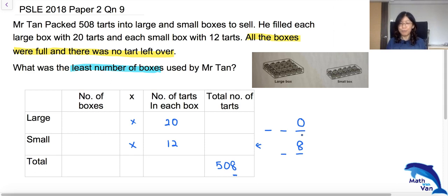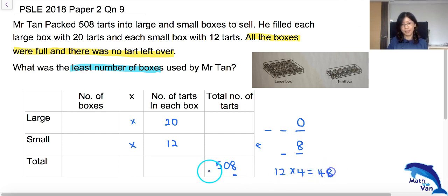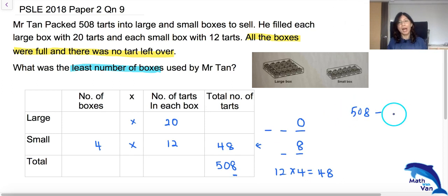It's pretty simple. 2 times 4 gives me 8, so 12 times 4 gives me 48. So this is 48 here. If this is 48, then how many tarts came from the large boxes?